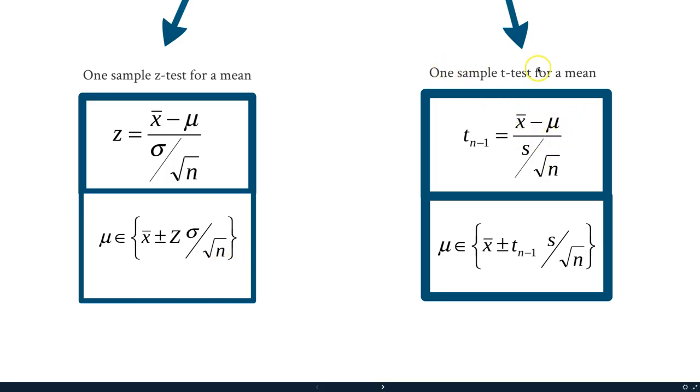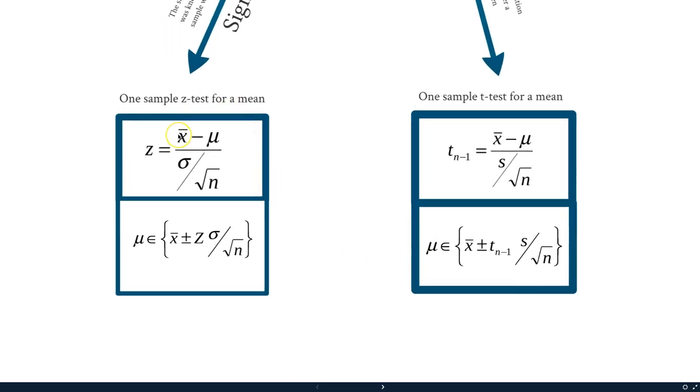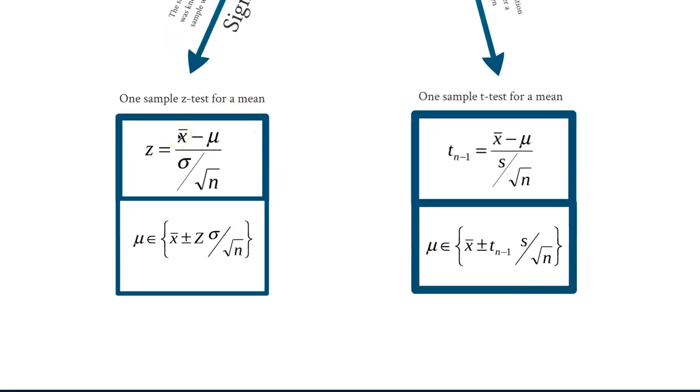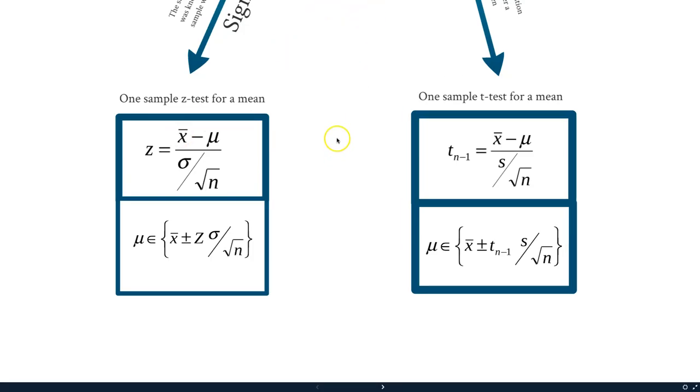Over here, if we have a one sample t-test for a mean, that means that we only know the sample standard deviation, and then linked with it as well we have the confidence interval down here. Check it out, we've already done this equation. This is our x-bar plus minus t, n minus one for the degrees of freedom, remember that, and then we have our sample standard deviation divided by the square root of n. Once again, mu is contained within here, and that's how we get to our correct testing equations for doing a one sample test for a mean, whether we've got the population standard deviation or if we have the sample standard deviation.